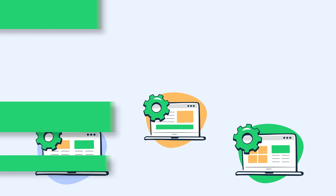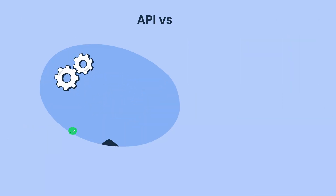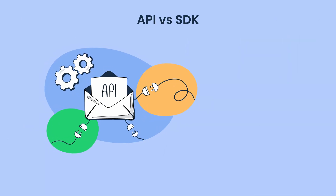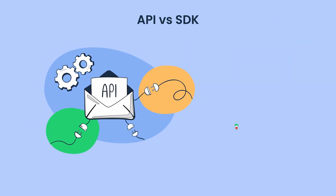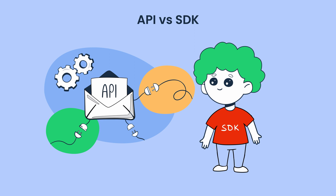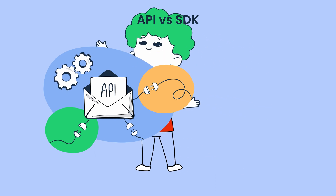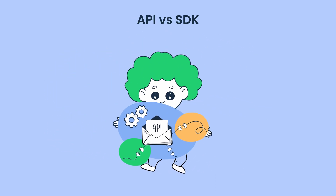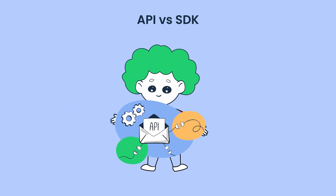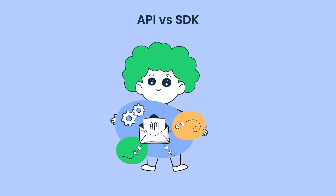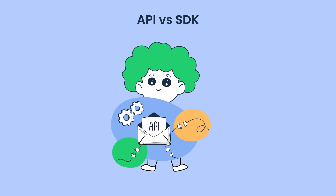But how does an SDK differ from an API? APIs let your apps communicate with other apps or services, while SDKs are toolkits for building software or application systems, which often contain APIs.